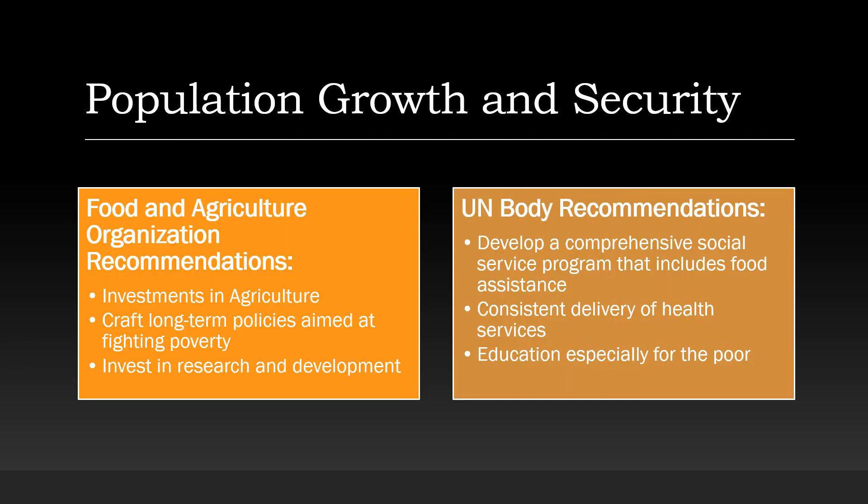The FAO recommends that countries increase their investment in agriculture, craft long-term policies aimed at fighting poverty, and invest in research and development. The UN body also suggests that countries develop comprehensive social service programs that include food assistance, consistent delivery of health services, and education especially for the poor. If domestic production is not enough, it becomes essential for nations to import. The FAO therefore enjoins governments to keep their markets open and to eventually move towards a global trading system that is fair and competitive, and that contributes to a dependable market for food.